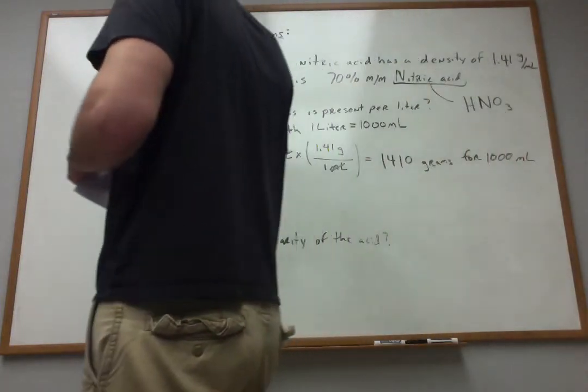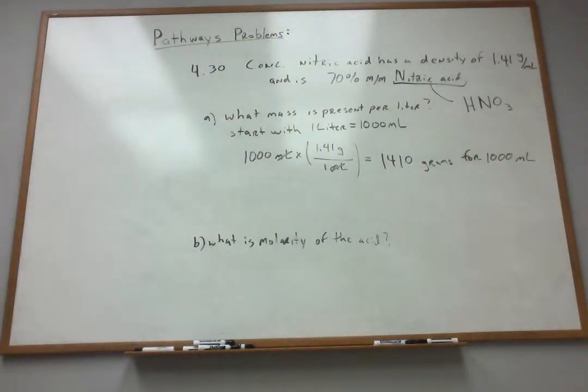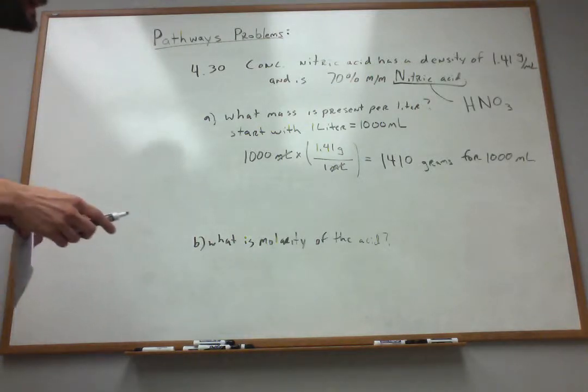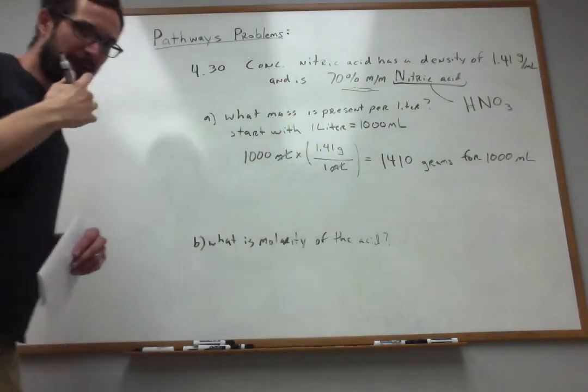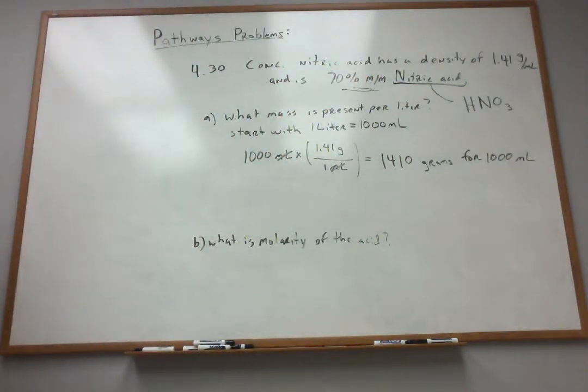In this case, that concentrated acid solution would have a mass of 1410 grams for 1,000 milliliter volume. Now, why did I do that? Well, I was told in the problem a mass percent. That tells me the mass fraction of HNO3 in the mixture, essentially.